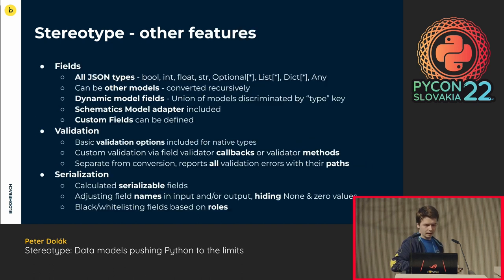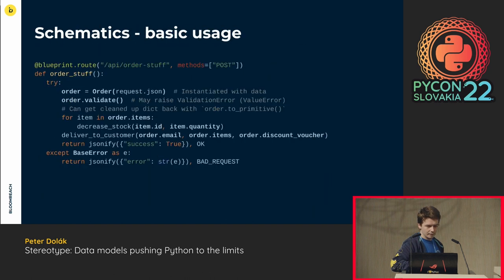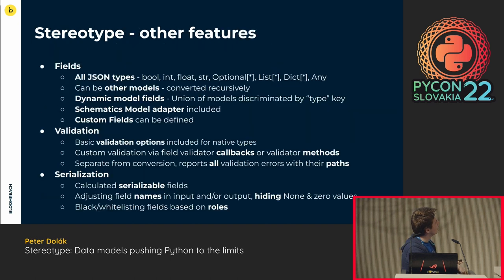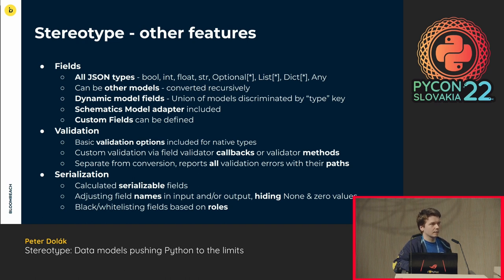The basic usage is very similar to Schematics. Basically, if you were using a Stereotype model, this code would work almost the same — just a different exception, maybe a nicer one. So let's talk about some features that I added. You can see these on the GitHub, but I'll go through them quickly. Currently it has all the field types that are supported in JSON. I didn't bother adding much more, but I probably will later.